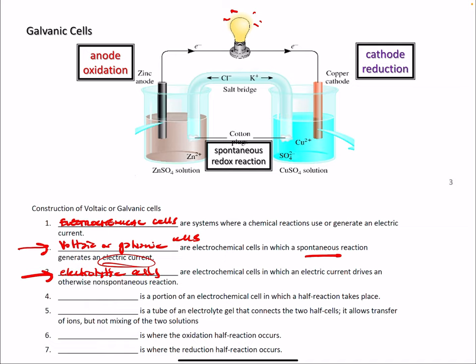The half cell is a portion of an electrochemical cell in which a half reaction takes place. The salt bridge is the tube of an electrolyte gel. Remember, electrolytes are ions. The salt bridge is a tube of electrolyte gel that connects the two half cells. It's a transfer of ions, but not mixing of the two solutions.